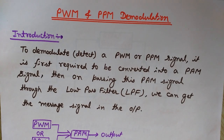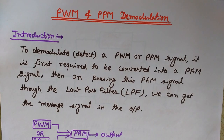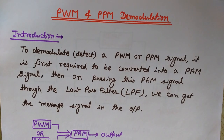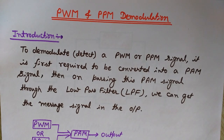There is another type of pulse modulation called PAM — pulse amplitude modulation. In PAM, the amplitude of the pulsed carrier wave is varied according to the amplitude of the message signal. In PWM and PPM, the width and the relative positions of the pulsed carrier wave are varied according to the message signal.